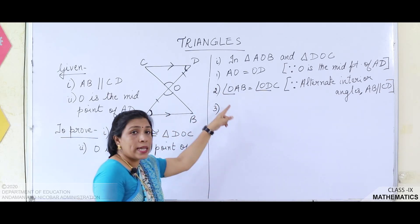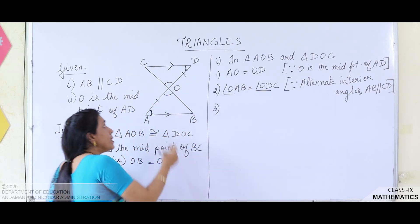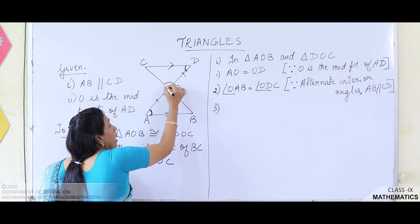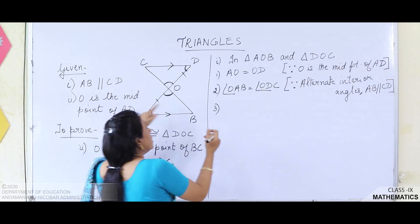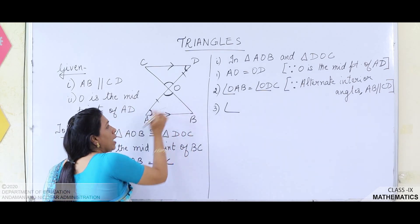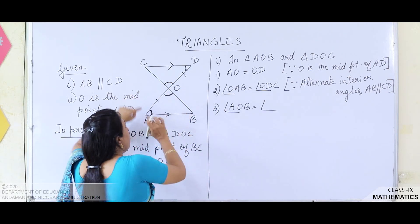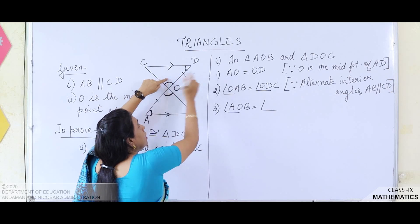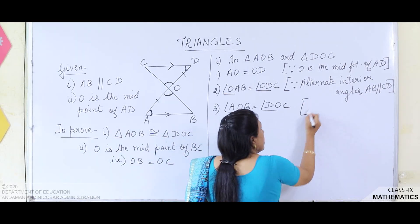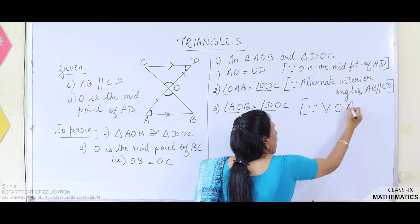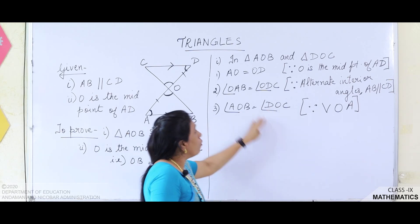Now the third equal part — we find this from the diagram. The two lines are intersecting each other, so we get a pair of vertically opposite angles which are always equal. Therefore, angle AOB is equal to angle DOC. The reason is vertically opposite angles. So now we have all three equal parts.